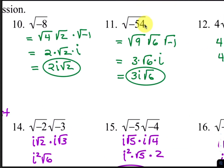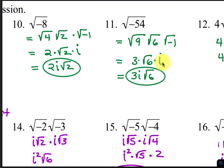For number 11, the square root of negative 54 can be written as the square root of 9 times the square root of 6 times the square root of negative 1. The square root of 9 is 3, and the square root of negative 1 is i. Your final answer is 3i radical 6.